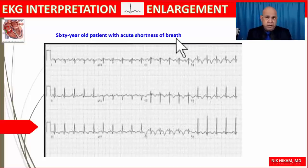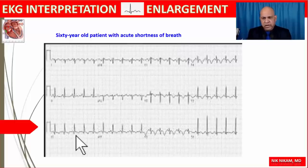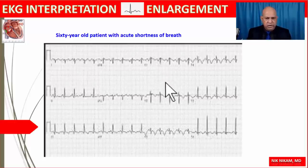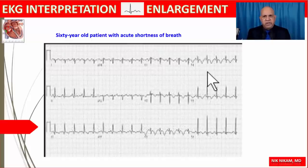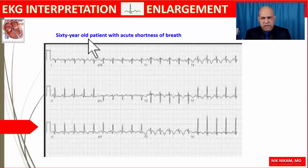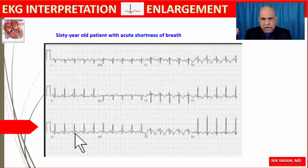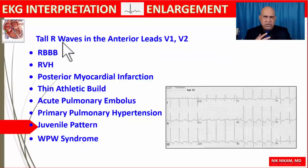Here is another example of sinus tachycardia in a 60-year-old patient with acute shortness of breath. We have sinus tachycardia, S1, Q3, T3, left atrial enlargement, and STT changes in the anterior leads. Given the clinical context — acute shortness of breath, sinus tachycardia, right axis deviation, S1Q3T3 pattern, and anterior wall ischemic changes — we could be dealing with pulmonary embolus.